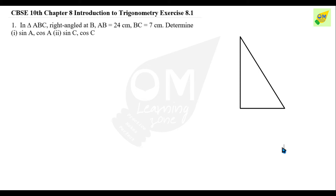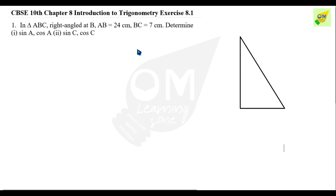If you want to draw the triangle, you will give it a name. We have a right angle at B — right angle at B.